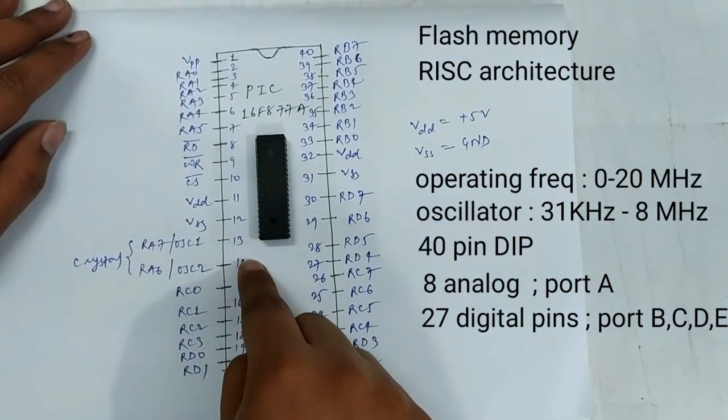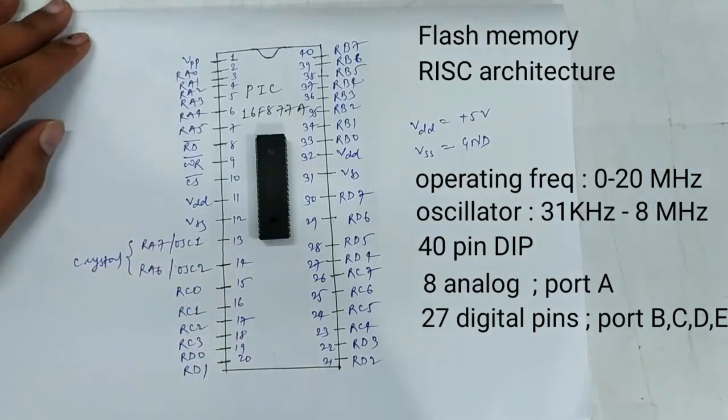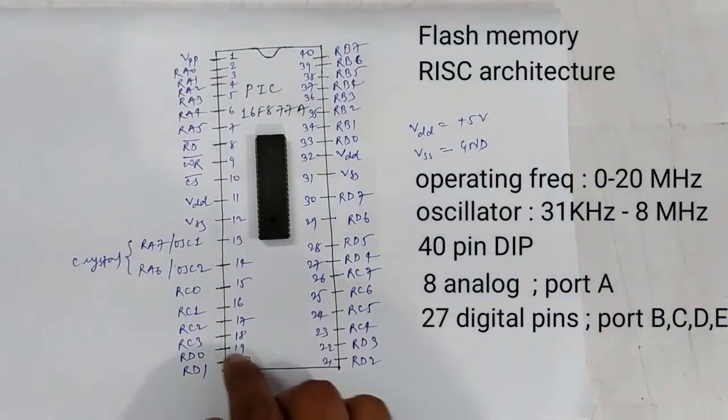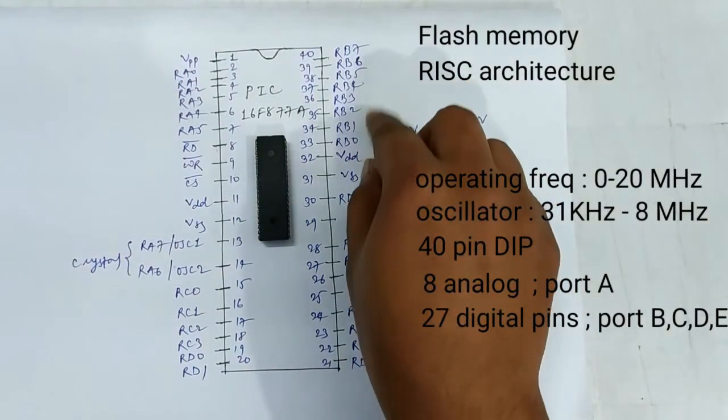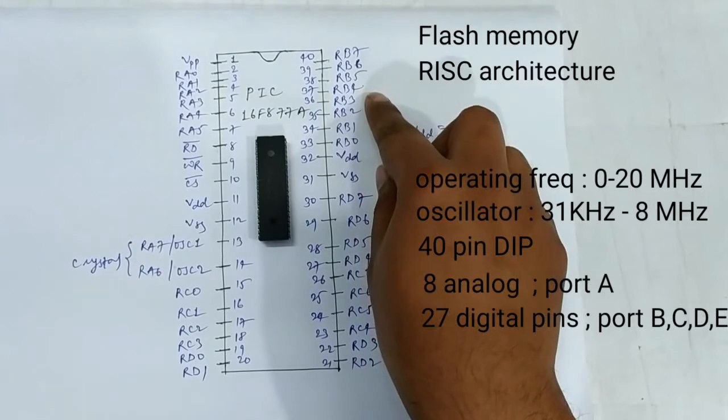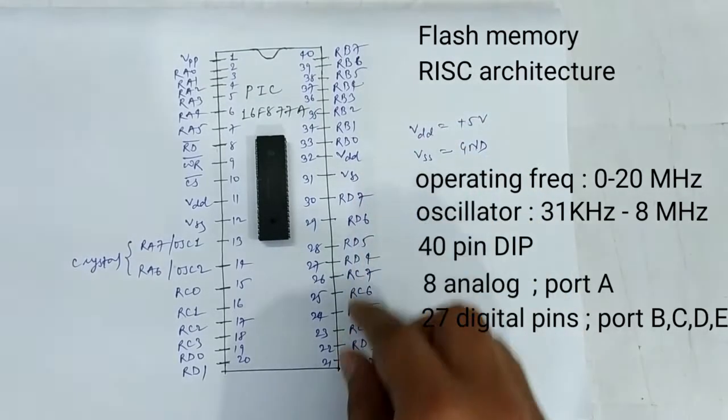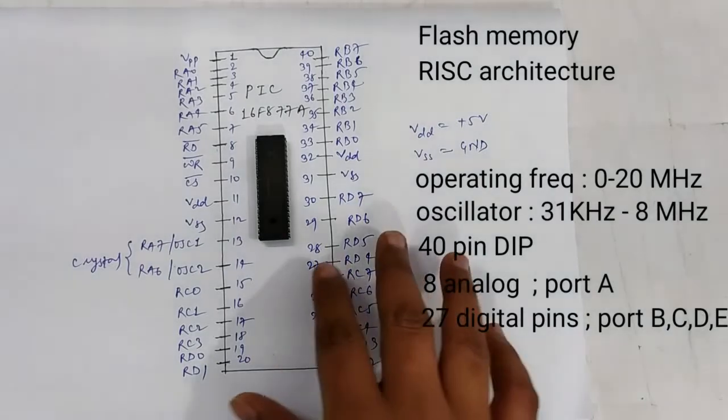On pins 13 and 14, we connect the crystal oscillator. There are 4 ports of digital pins: Port B has 8 pins, Port C has 8 pins, and Port D has 8 pins, but Port E has only 3 pins. So there are basically 35 analog and digital pins.